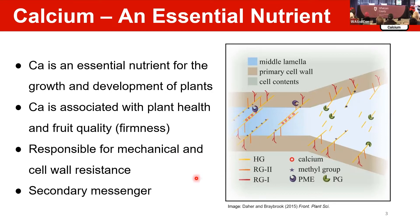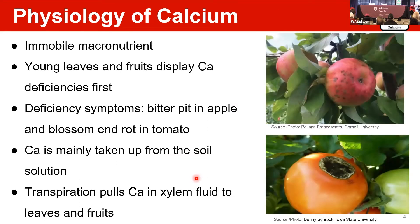Another importance of calcium is its role as a secondary messenger. Regarding the physiology of calcium: calcium is immobile as a micronutrient. Because of that, young leaves and fruit display calcium deficiency first — as seen with symptoms like blossom end rot in apple, Brussels sprouts, and tomato. Calcium may be taken up from the soil solution, so you need moisture in the soil. Transpiration moves calcium in the xylem, which is why leaves and fruit uptake is so important.